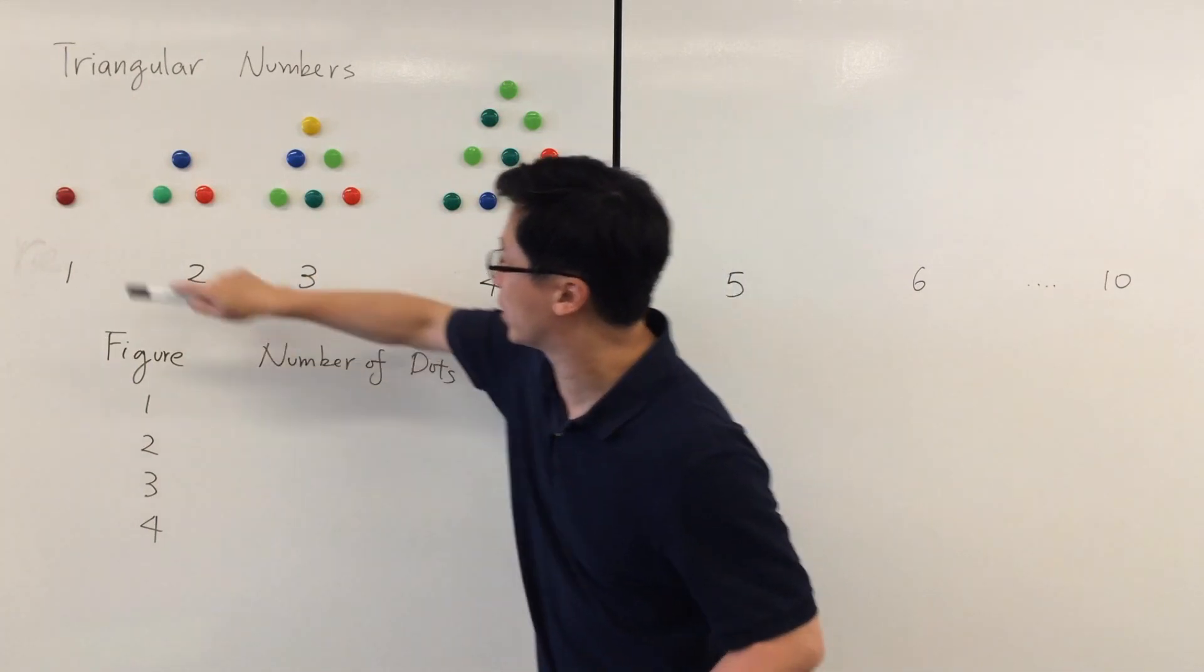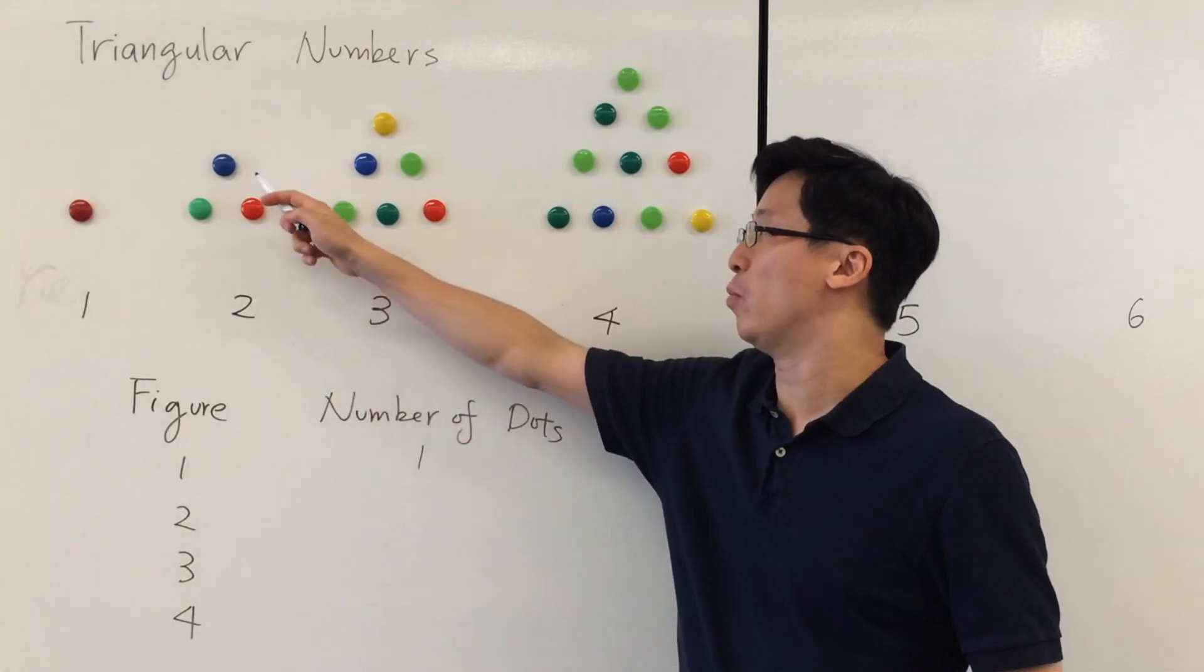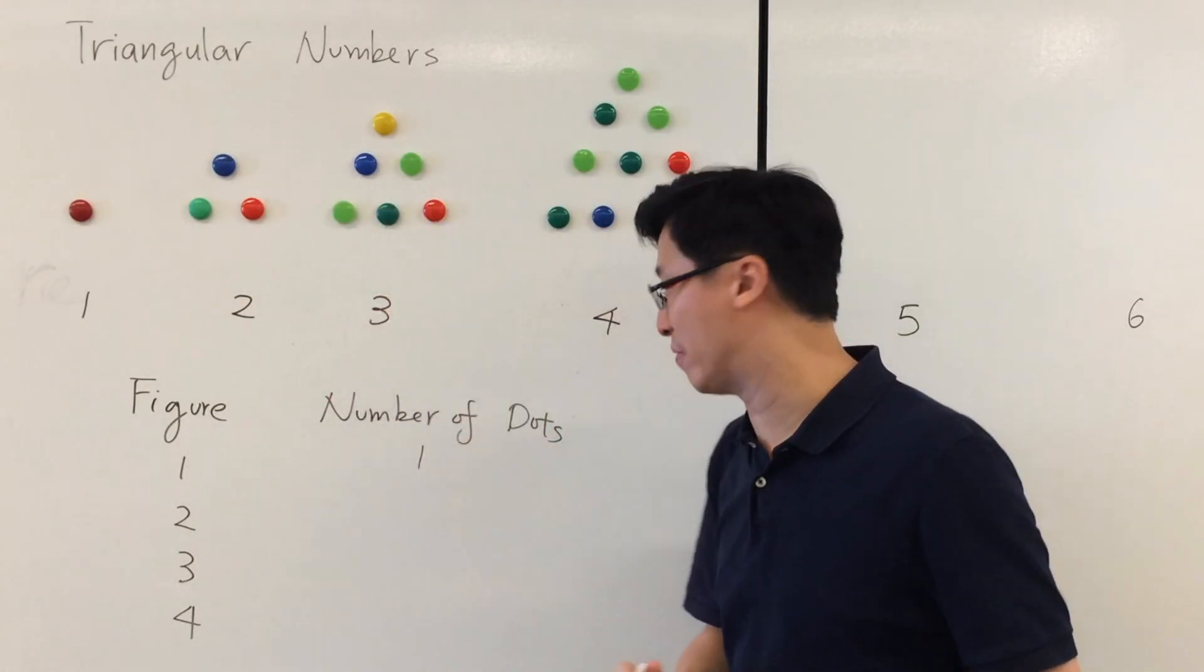For figure one we have only one dot. For the second one we have 1+2, that means we have three dots.